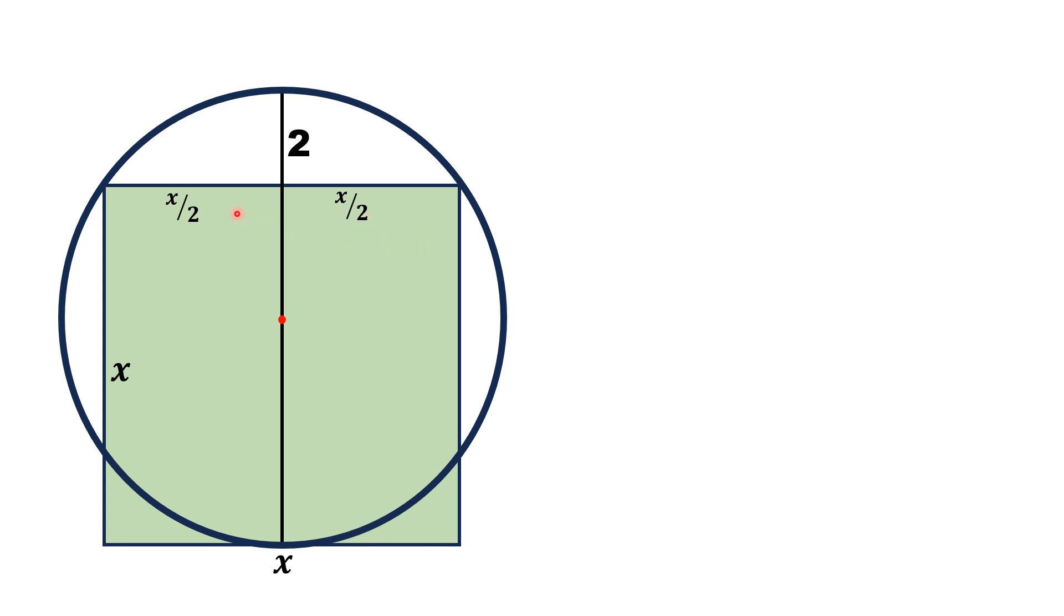Because we know from a circle theorem that radius always divides a chord into two equal parts. Because this side of the square is a chord on the circle and this line is a radial line, so it divides equally into two parts.